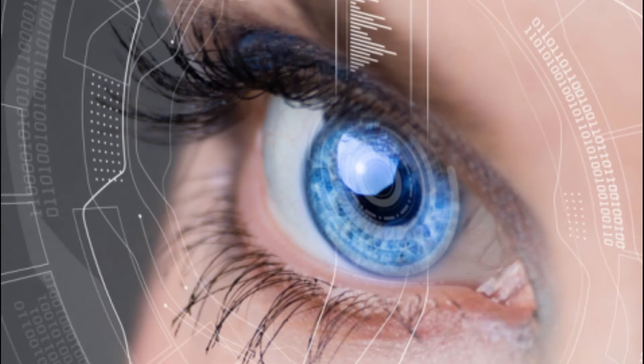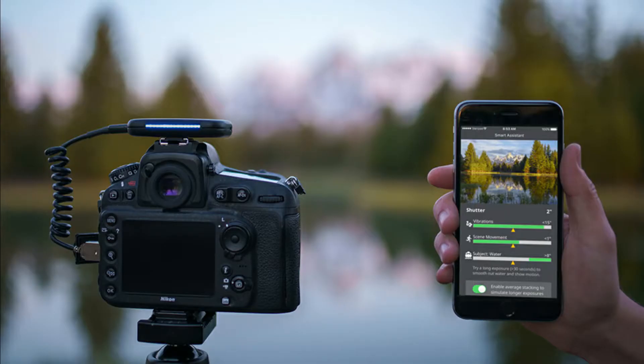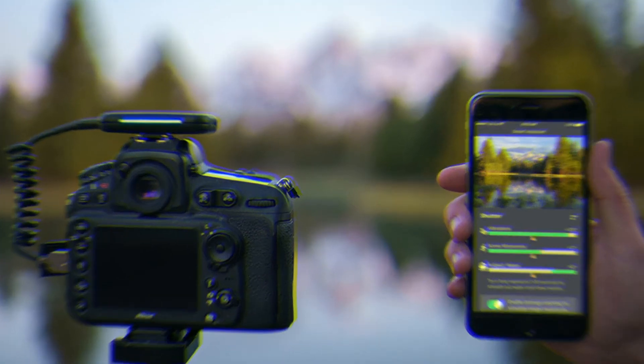Let's start our video with some interesting facts. How many megapixels is the human eye? If the human eye were a digital camera, it would have a resolution equivalent to 576 megapixels. That's huge when you compare it with a normal phone camera or a digital camera.